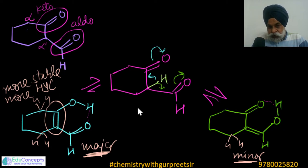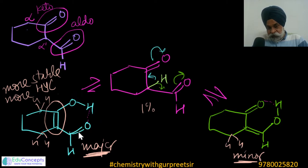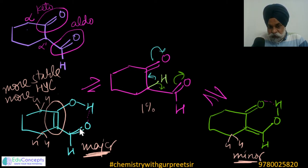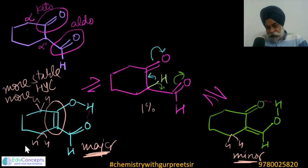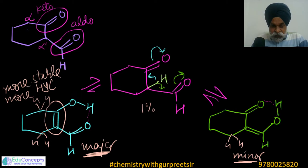This is how you identify tautomeric forms from activated methylene compounds and determine which is more stable. When discussing thermodynamic stability, consider which structure has a more substituted alkene or more hyperconjugative hydrogens. The one with more hyperconjugative hydrogens is more stable.